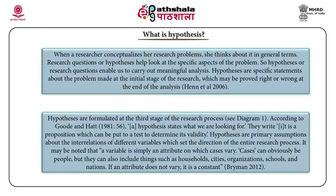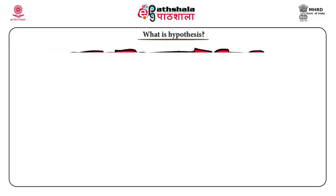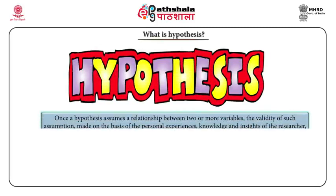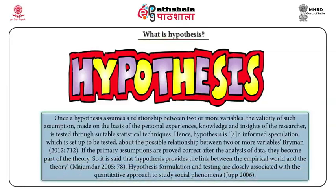A variable is simply an attribute on which cases vary. Cases can obviously be people, but they can also include things such as households, cities, organizations, schools, and nations. If an attribute does not vary, it is a constant. Once a hypothesis assumes a relationship between two or more variables, the validity of such an assumption — made on the basis of personal experiences, knowledge, and insights of the researcher — is tested through suitable statistical techniques. If the primary assumptions are proved correct after analysis of the data, they become part of the theory. It is said that hypothesis provides the link between the empirical world and theory.